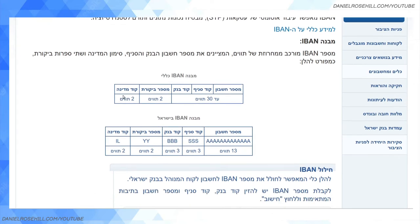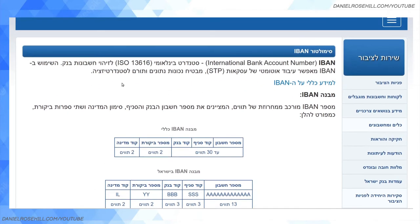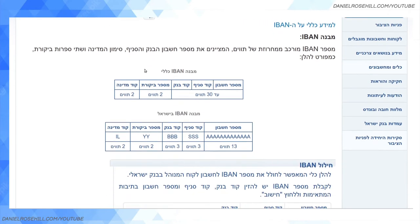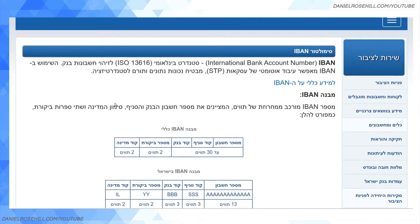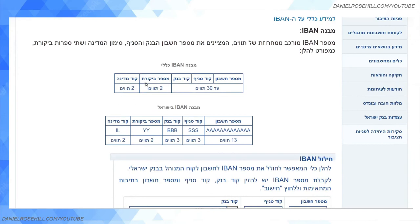The IBAN number follows the standard format defined according to ISO standard 13616. It starts with two letters which identify the country — in Israel that is IL. Then you have mispar bikoret, two check digits.